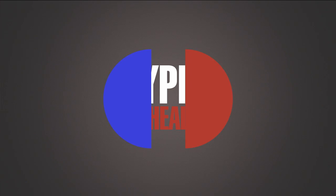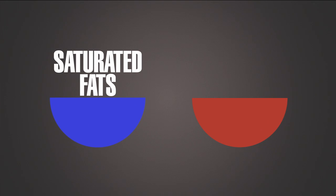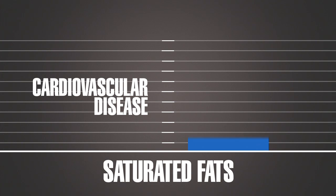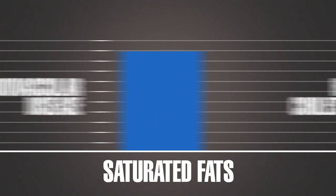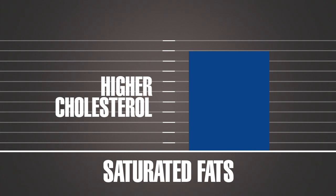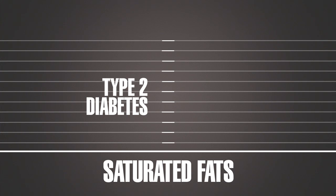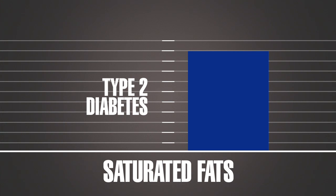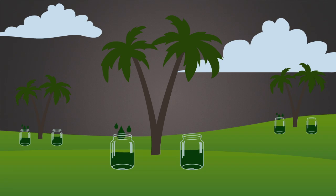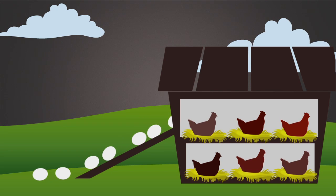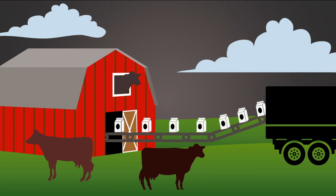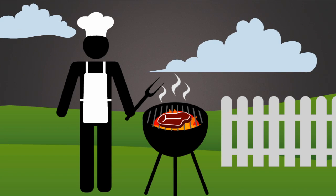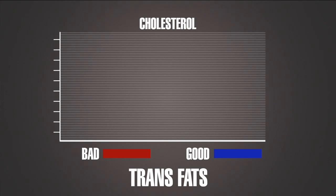There are two types of unhealthy fat in foods: saturated fats and trans fats. Saturated fats can increase your chances of cardiovascular disease, raise your cholesterol levels, and may increase your chances of getting type 2 diabetes. Saturated fat is found in things such as palm oil, eggs, milk, and meat.